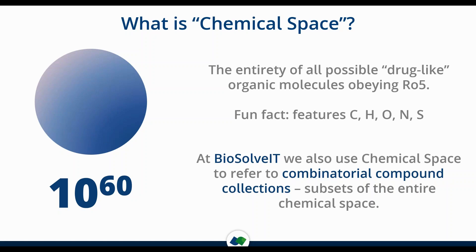What's really interesting about this number is that it only features carbon, hydrogen, oxygen, nitrogen, and so forth. All fancy atoms like boron or even phosphorus are not included in this calculation. So if you look at compounds that feature phosphate groups, those are not part of this 10 to the power of 60 space. Therefore, in ultimate theory, the actual space is even larger.